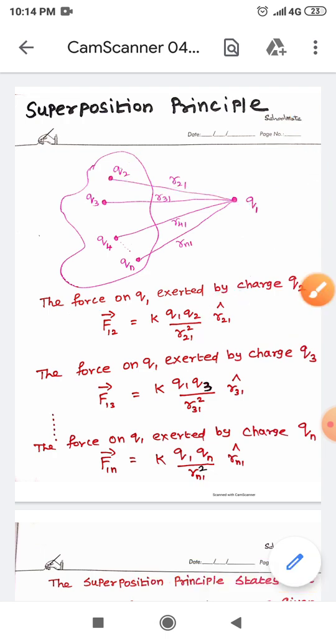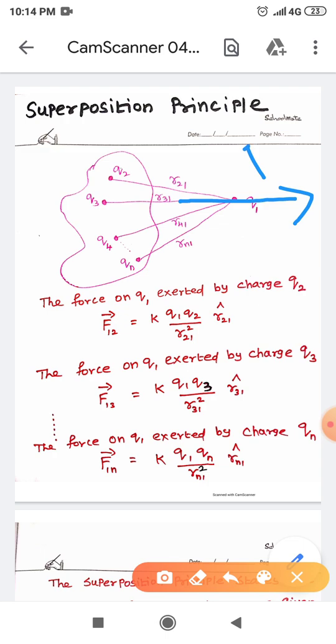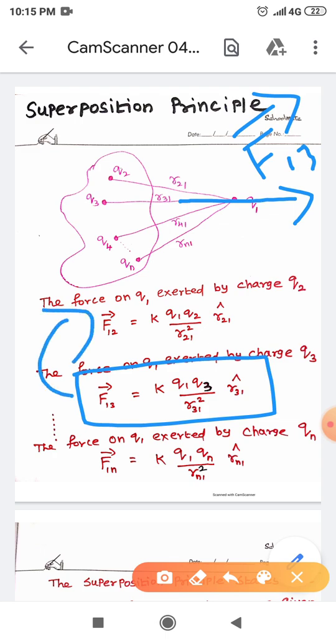And similarly, the charge Q3 exerts a force on charge Q1 in this direction. And this force is F13 vector, and it can be expressed using this expression. Already you know how to write these expressions. Similarly, the force on Q1 exerted by the charge Qn is K into Q1 Qn divided by Rn1 square and the unit vector is Rn1 cap.